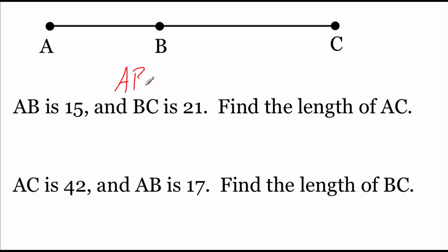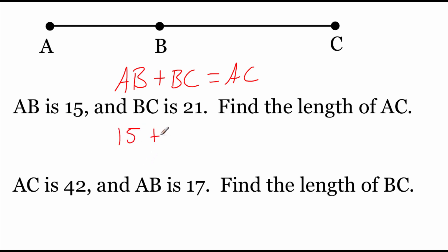So we've got a couple examples that we're going to run through using the segment addition postulate. It says the length of AB plus the length of BC equals the length of AC, and we're given a picture to take a look at. In this first example, the length of AB is 15 and the length of BC is 21, and we want to find the length of AC. So filling in our equation: 15 plus 21 equals AC. On the left hand side 15 plus 21 gives us 36. So 36 is the length from A to C.